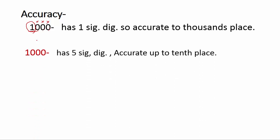Let's take another example: 1000.0. As this number has a decimal, all digits are significant, so we have 5 significant digits. It is accurate up to the tenths place — this last zero is in the tenths place — so this number is accurate up to the tenths place.